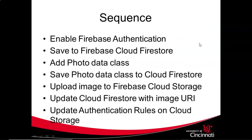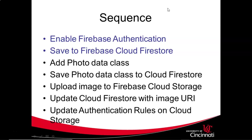This is roughly the sequence of videos in the series. First, enable Firebase Authentication — first with email, then with Google. Next, save our specimen to Cloud Firestore, which we've already done in a previous video, so those steps are nearly complete once authentication is covered. We still need to add the PhotoData class to store photo metadata and associate it with our specimen. Then we'll upload the image to Firebase Cloud Storage, get a URI, update Cloud Firestore with that URI, and use the photo ID and user ID to create private user directories on Firebase Cloud Storage — ensuring users can only read and write to their own private directory. So without further ado, let's get started.